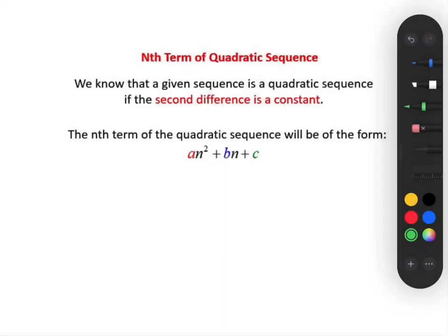How do we know whether a sequence is quadratic or not? And if you are told that a certain sequence is quadratic, can you find the general equation for the nth term of that quadratic sequence? That's exactly what I'm going to teach you in this video. A given sequence is quadratic if the second difference is a constant.